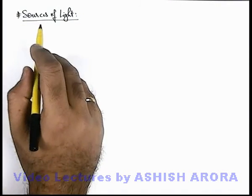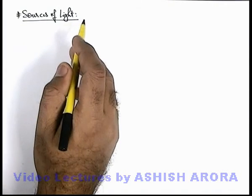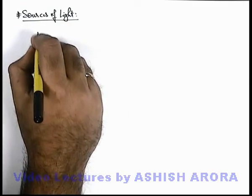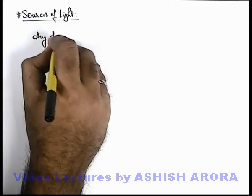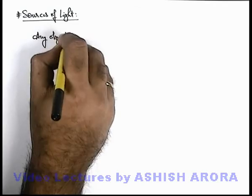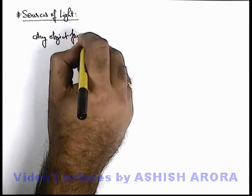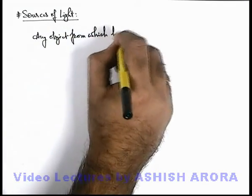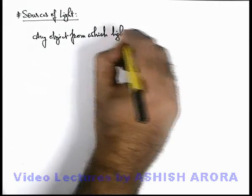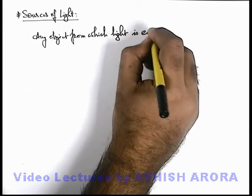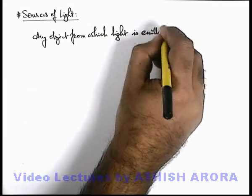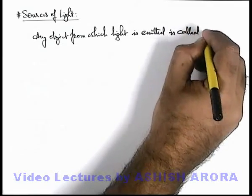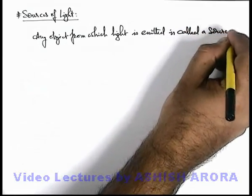Let us now discuss about the sources of light. Any object from which light is emitted is called a source of light.